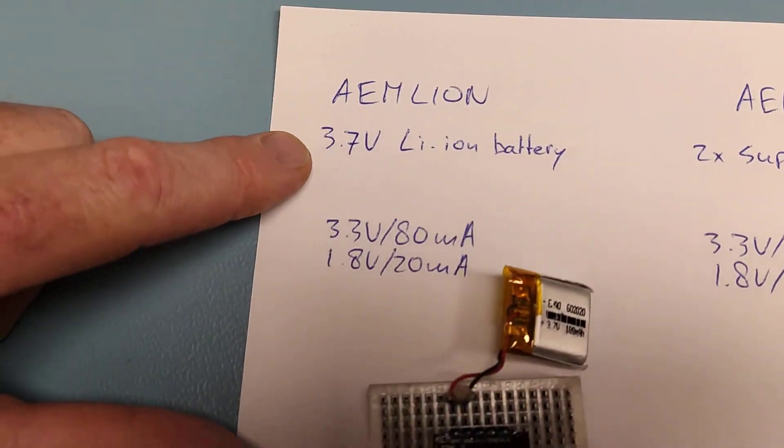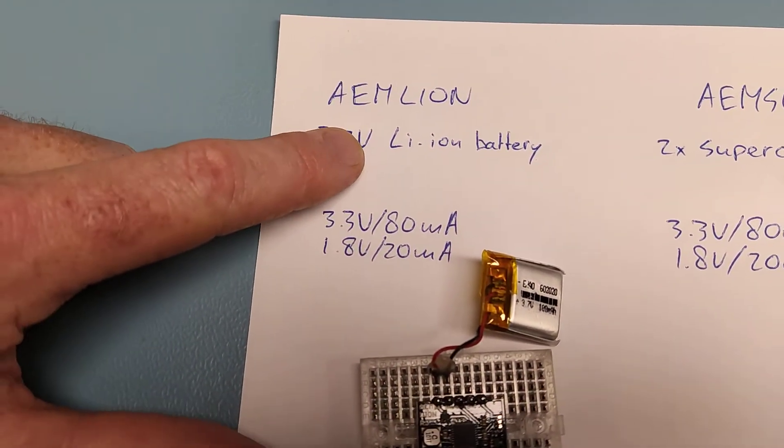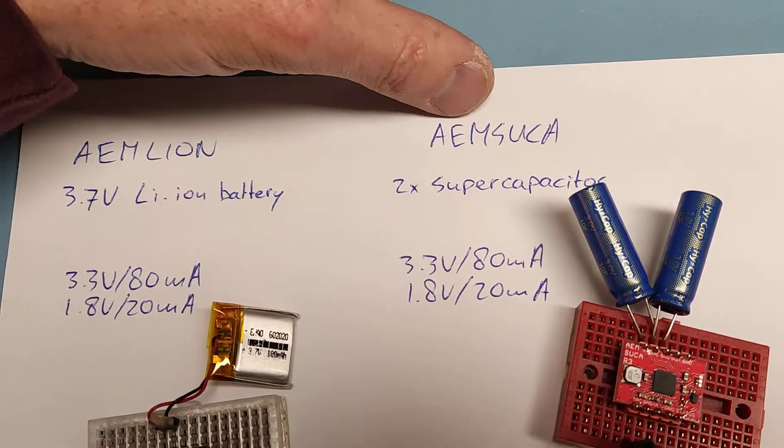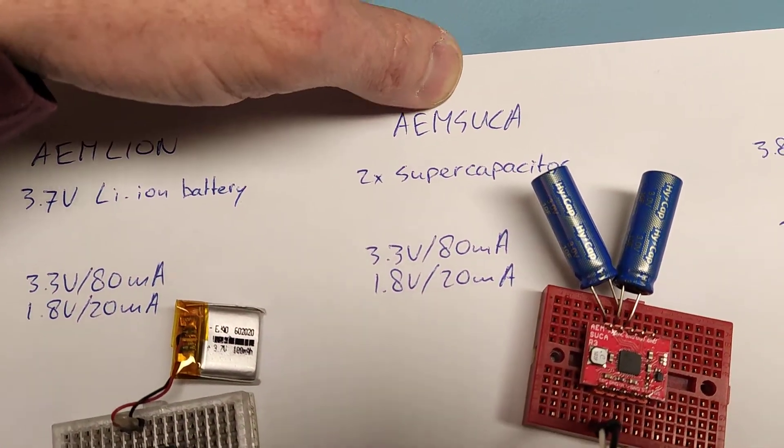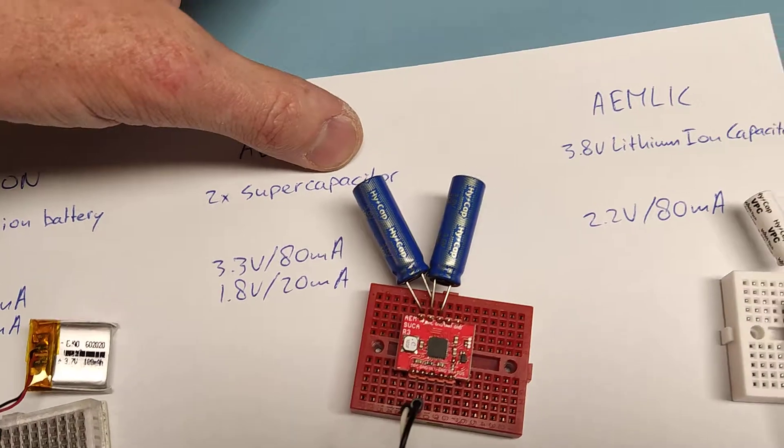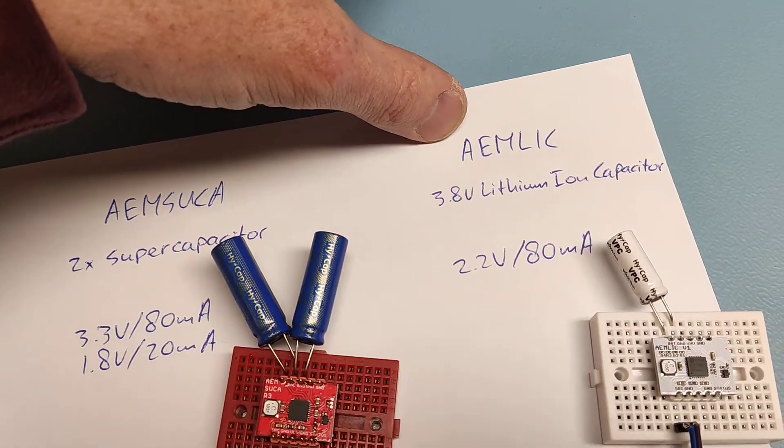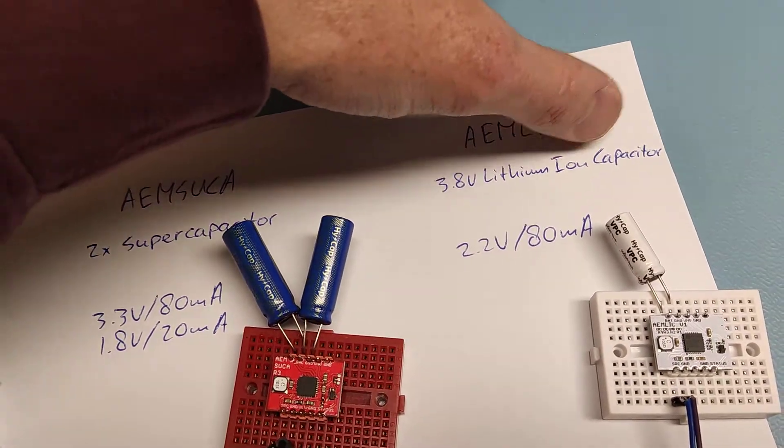The AEM Lion stores the solar energy into a lithium-ion battery. AEM Suka stores it into a pair of supercapacitors, and the AEM Lick stores the energy into a lithium-ion capacitor.